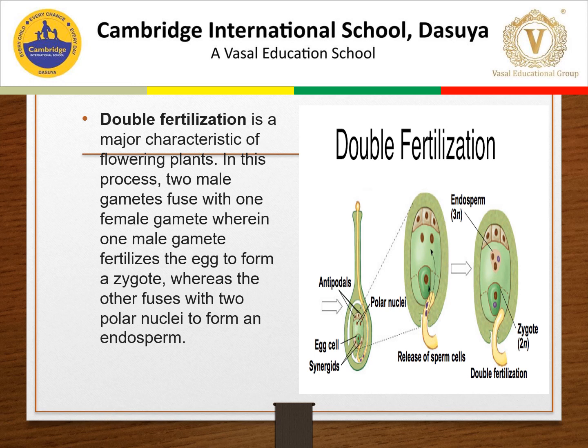The pollen grain contains two male gametes and releases them into the embryo sac. One male gamete fuses with the egg to form a zygote. The other male gamete fuses with the two polar nuclei to form endosperm — this fusion is called triple fusion. So two fusions take place: syngamy and triple fusion. These two processes together are called double fertilization. The function of endosperm is to provide nourishment to the developing embryo.